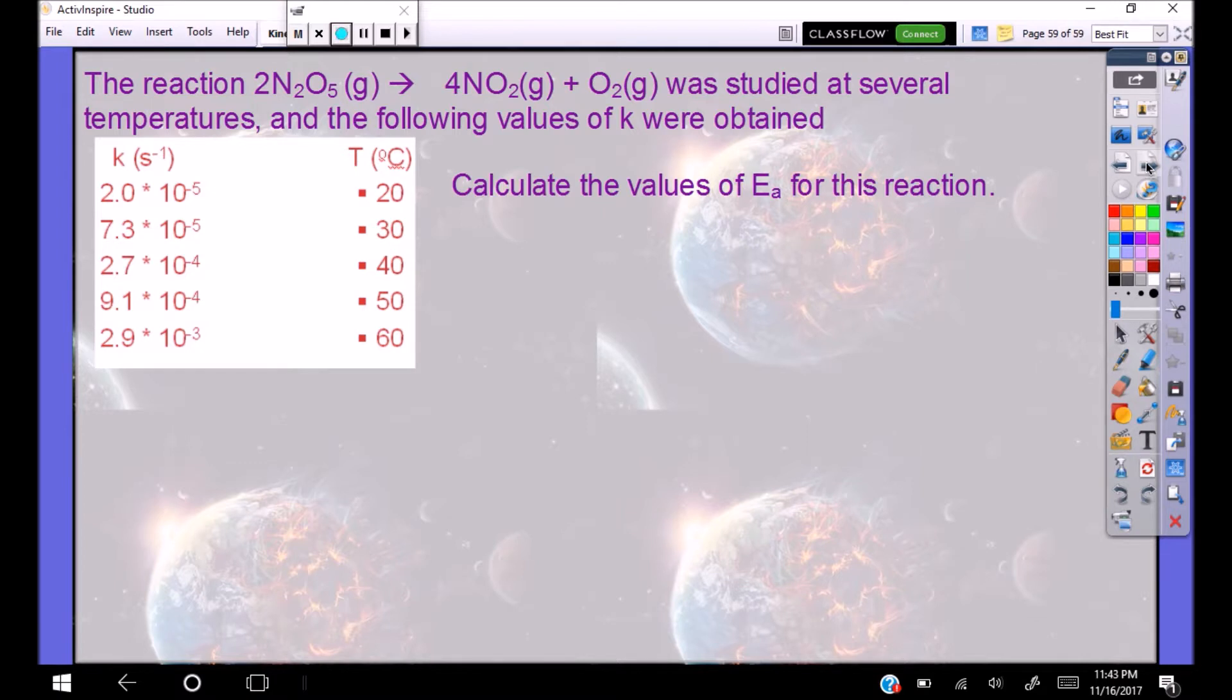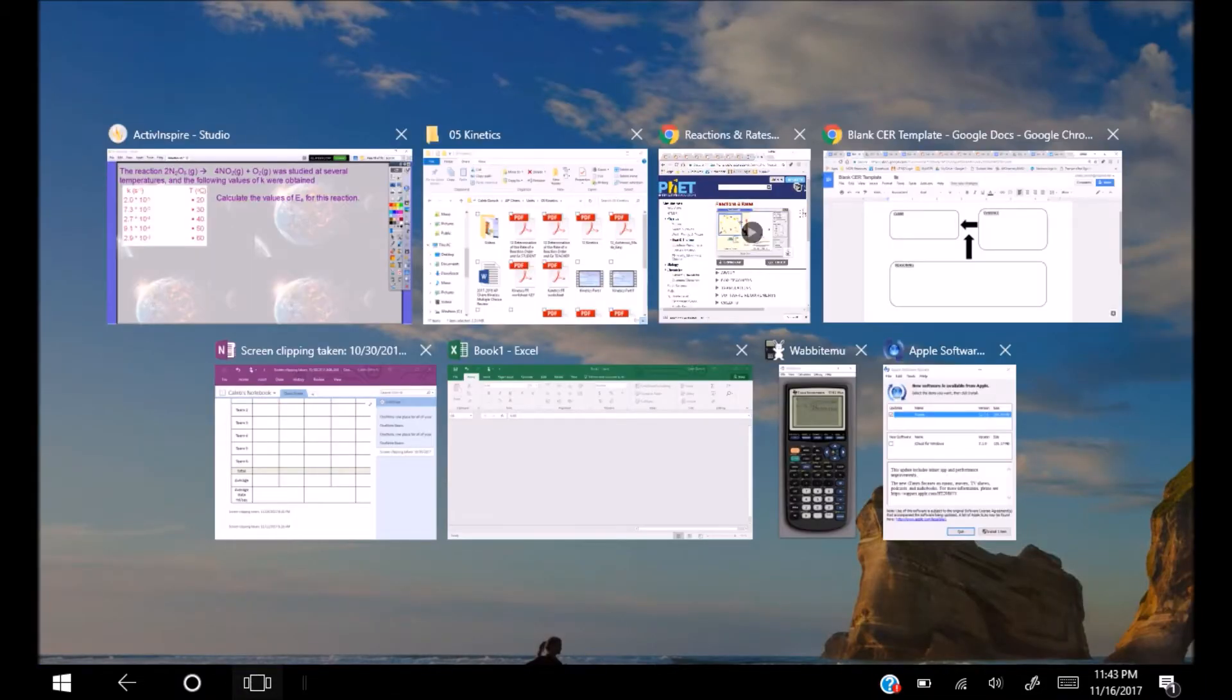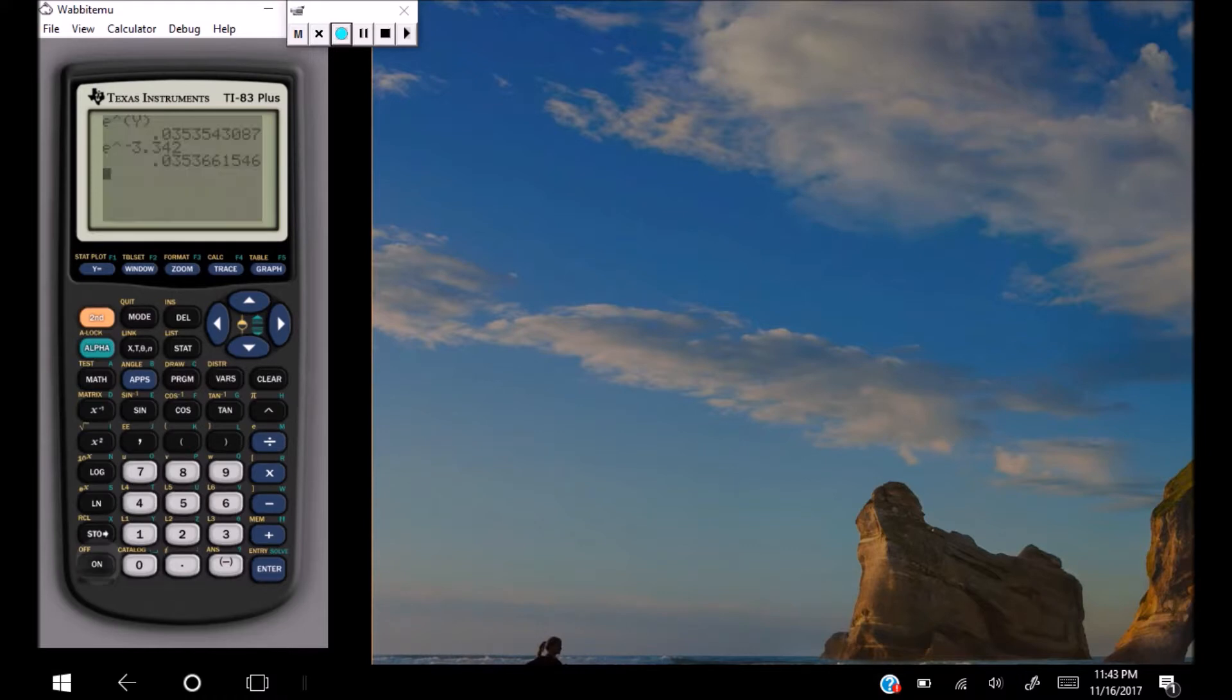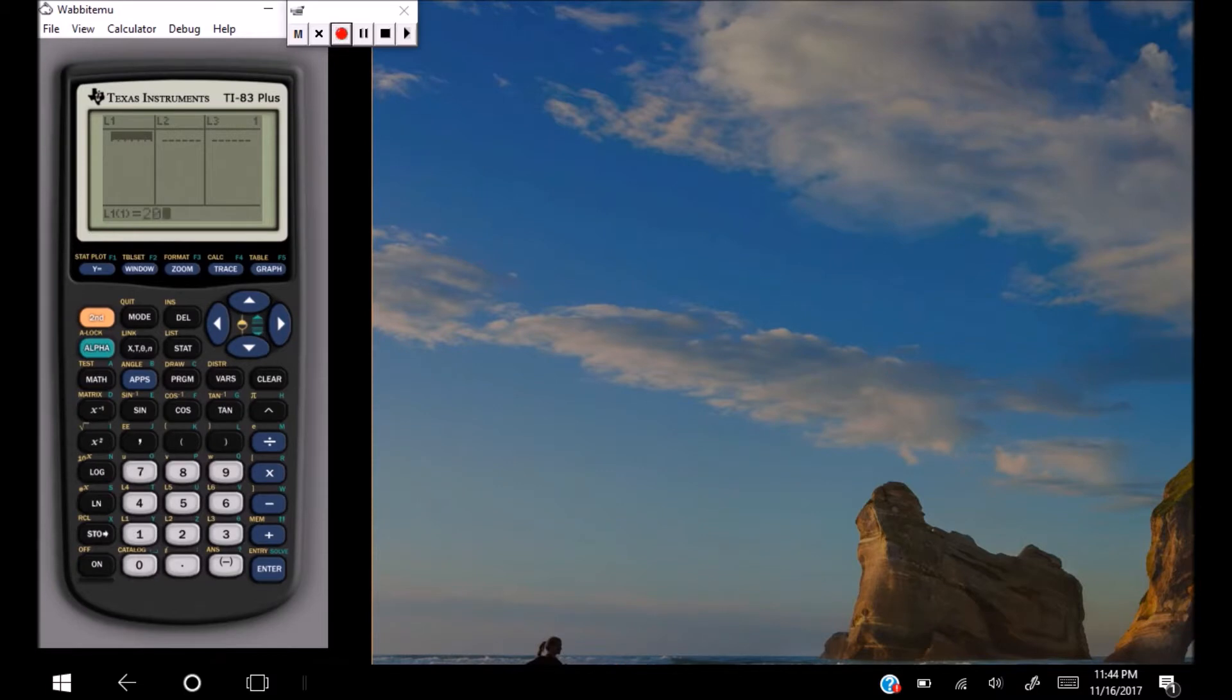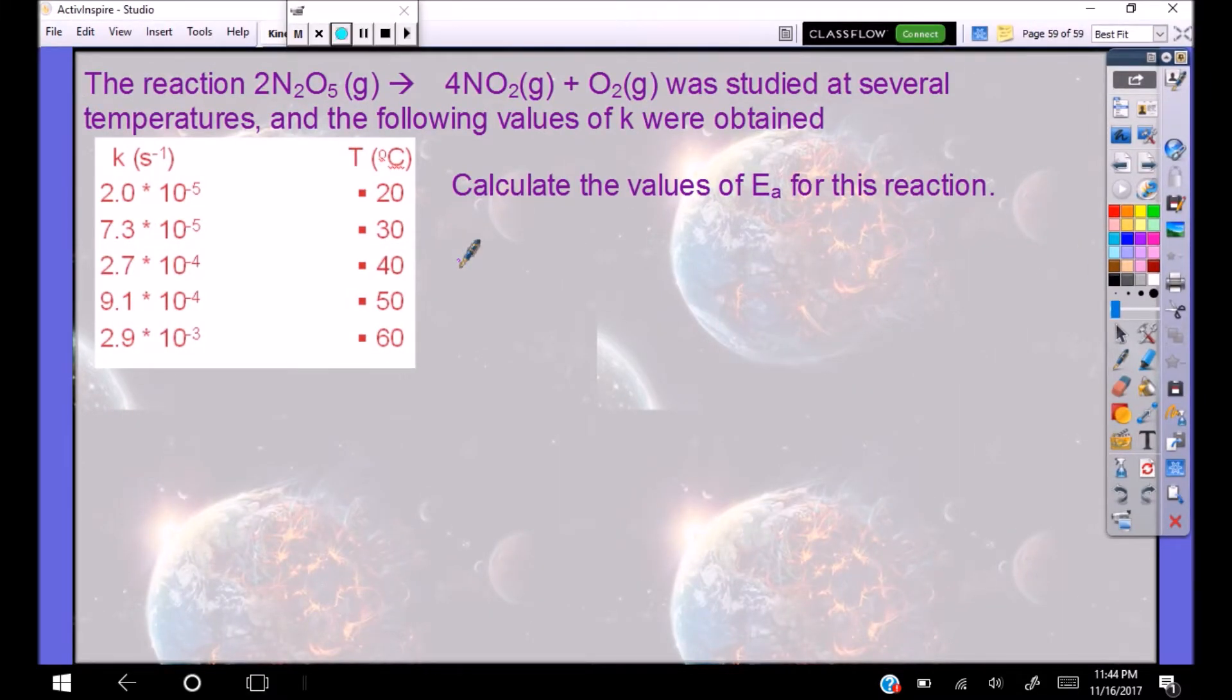So the reaction N2O5 gives us 4NO2 plus O2 and they give us several temperatures. So they want us to calculate the values of activation energy for this reaction. The easiest thing to do is put this thing in our calculator. So here's my calculator and I'm going to go to edit. I had a bunch of things in my list from the last play posit. I need to go clear those out real quick. And so I go up in increments of 10 degrees from 20 to 60. So that's easy. 20, 30, 40, 50, 60.